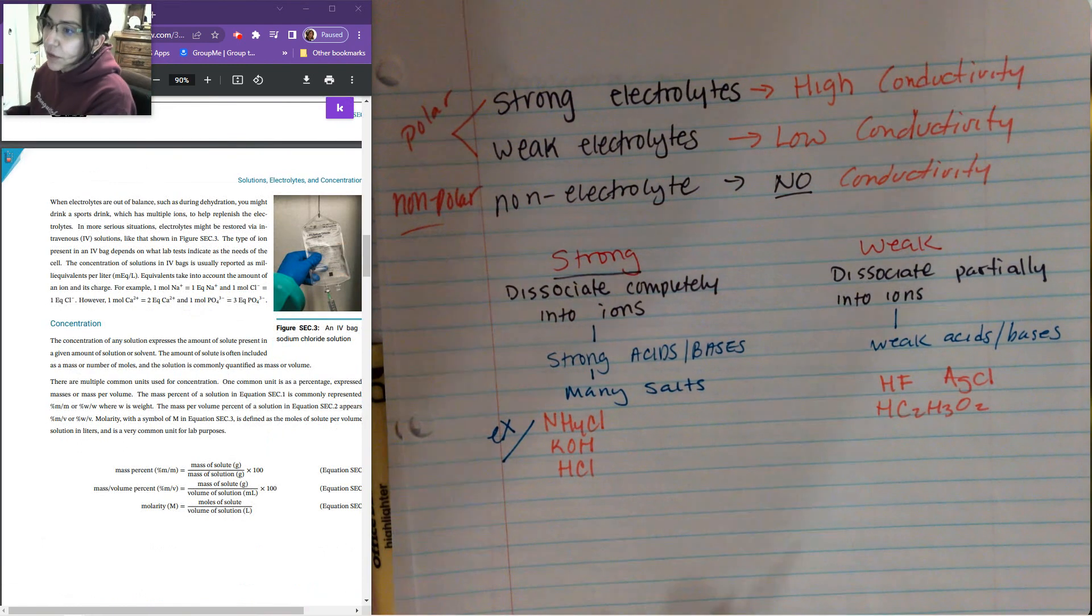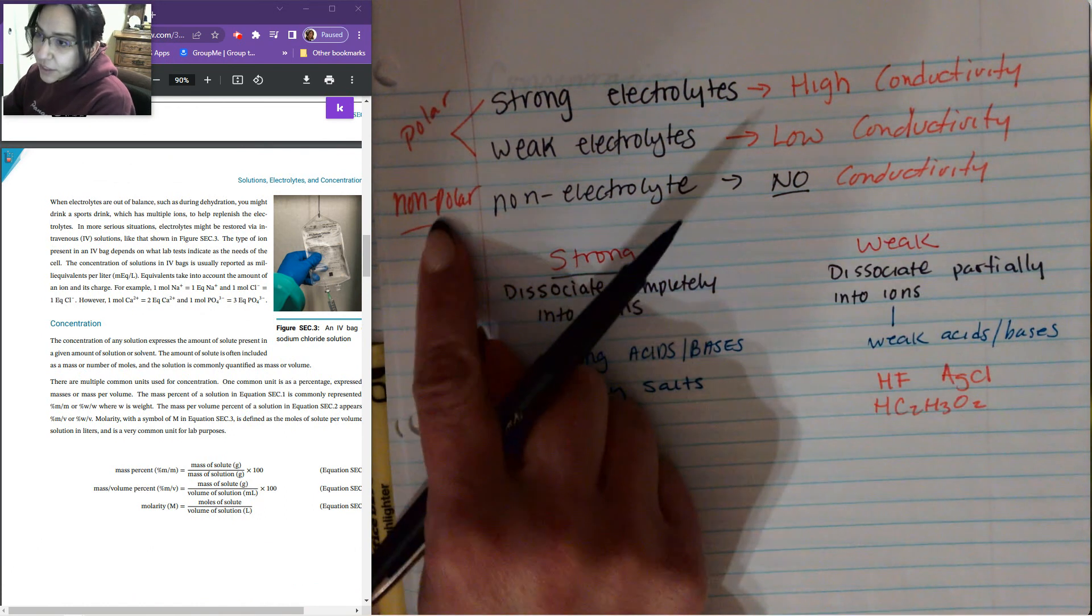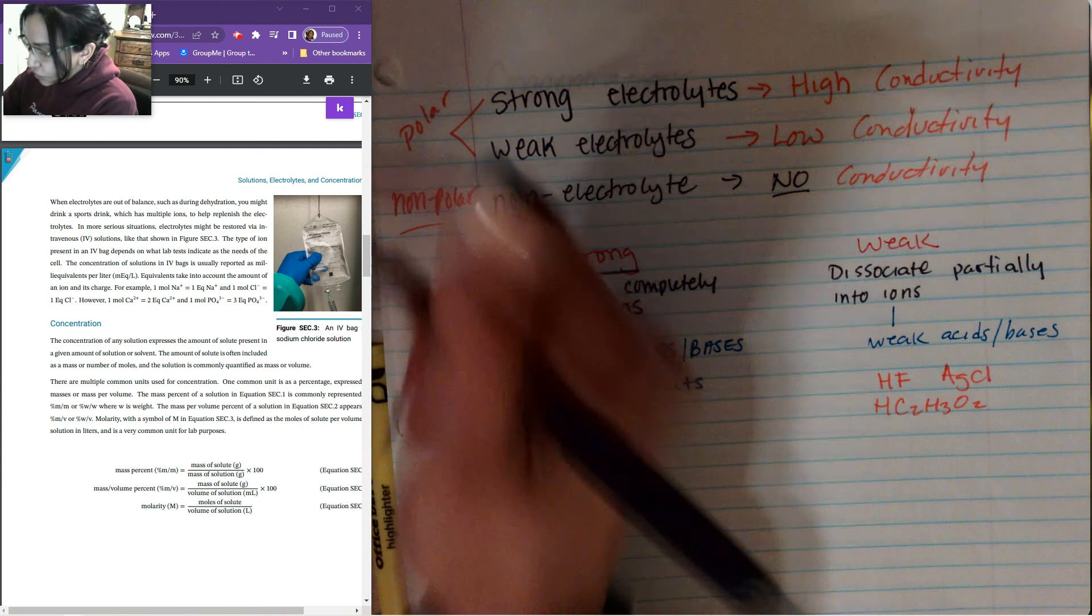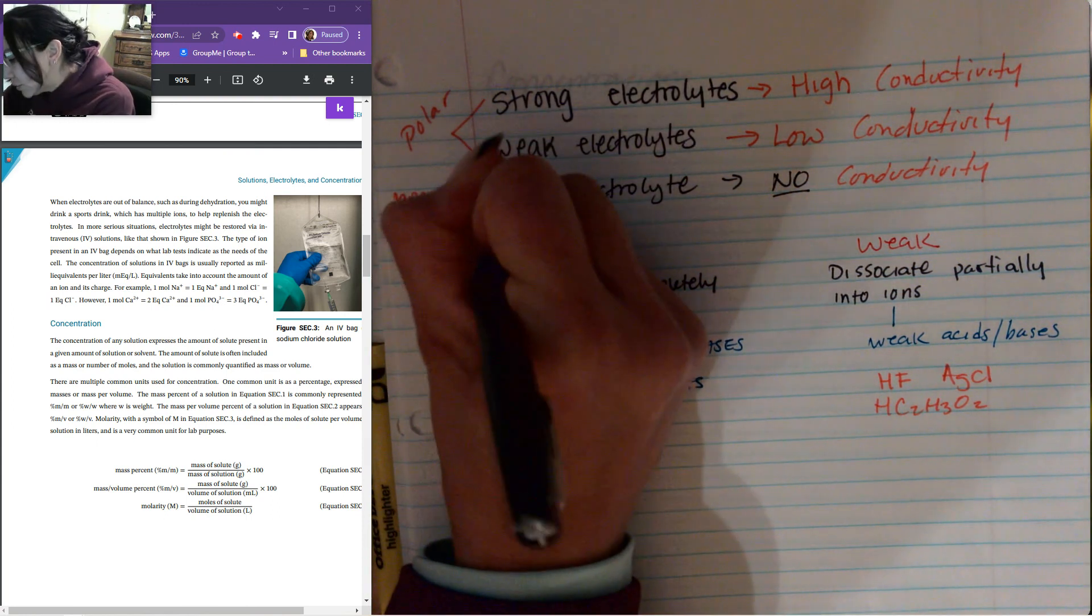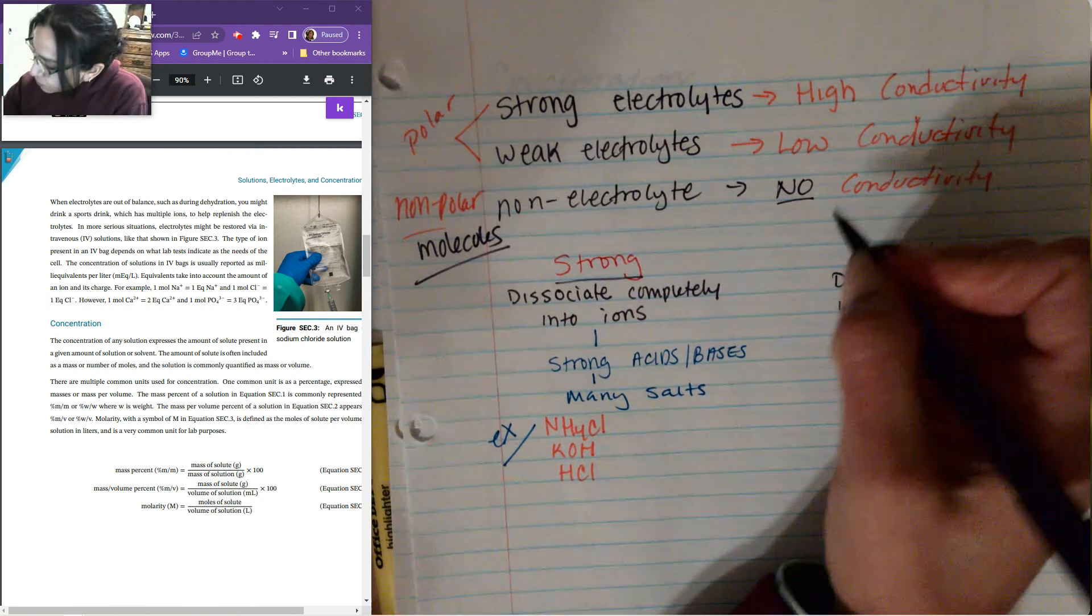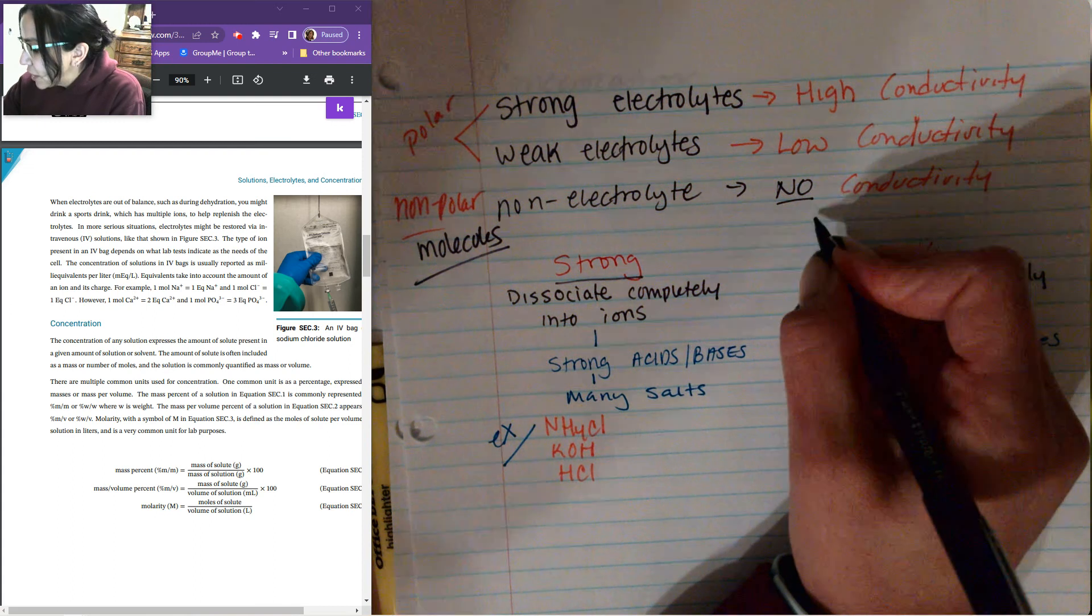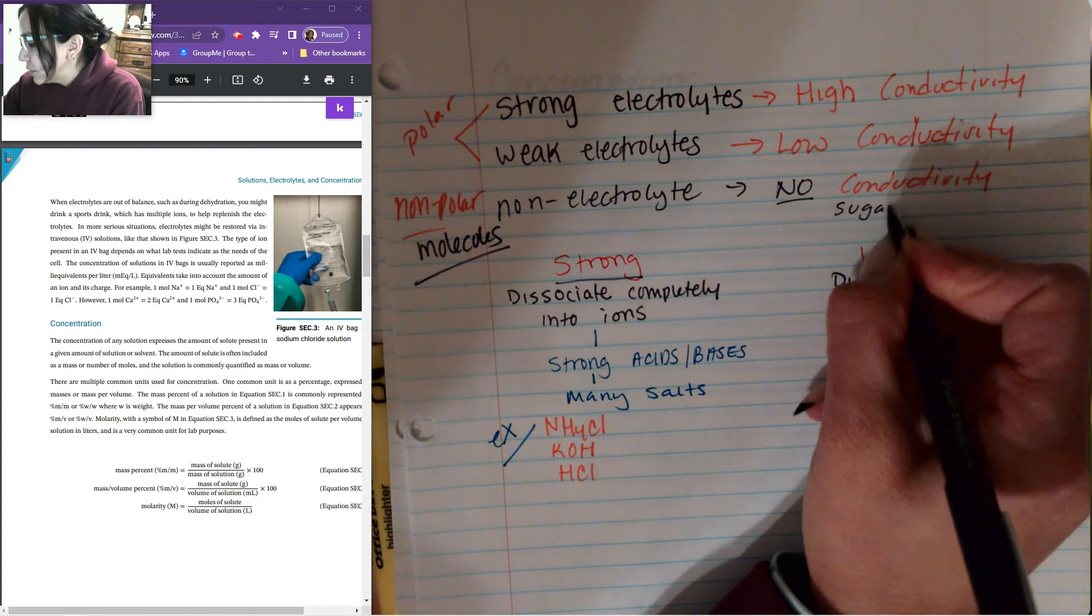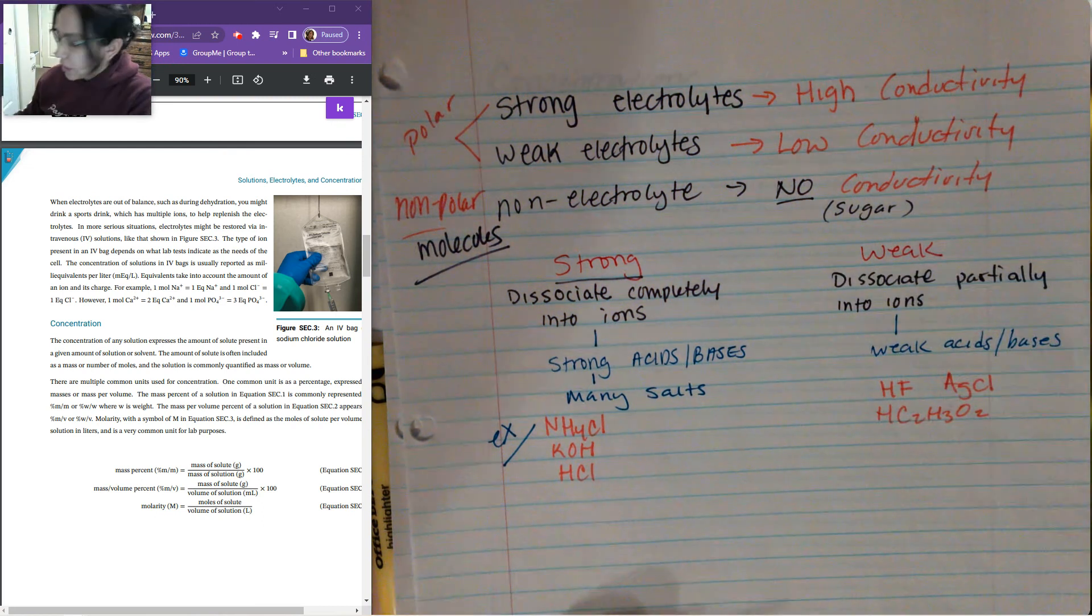Actually, before we start the next part, something I want to note about the non-electrolytes that produce no conductivity, they're non-polar, which means that they're actually molecules, which are covalent compounds. So for something that's a non-electrolyte and non-conductive, it would be like our sugar, table sugar, C6H12O6. That would also be non-conductive.